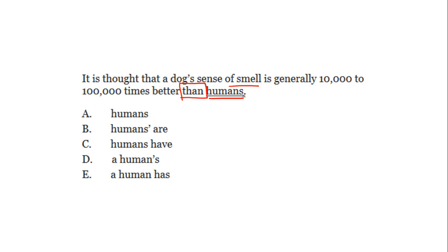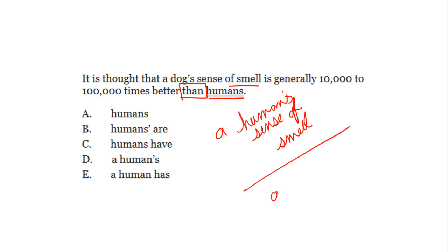We need to compare smell to smell. So the revision is: '10,000 to 100,000 times better than a human's sense of smell' — or simply 'a human's.' The right answer is D. The revised sentence reads: 'It is thought that a dog's sense of smell is generally 10,000 to 100,000 times better than a human's.'